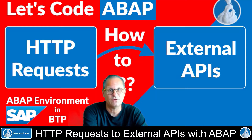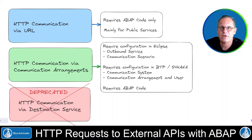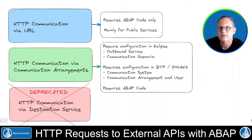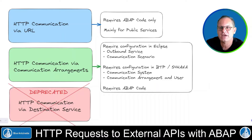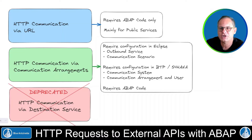Now let's do a quick overview. In order to make HTTP requests to external APIs, we have three approaches: the HTTP communication via URL, which is the blue one here; then the HTTP communication via communication arrangements, the green one; and the HTTP communication via destination service, which is the red one here.